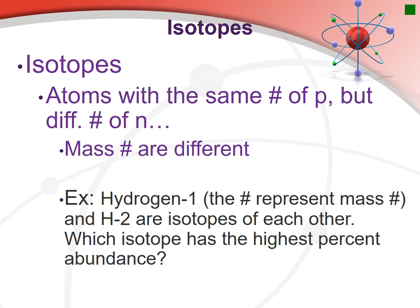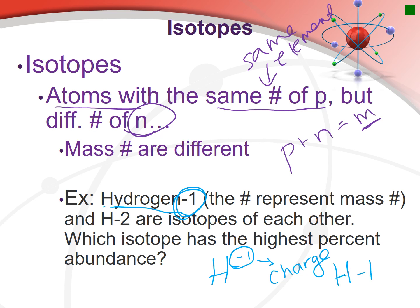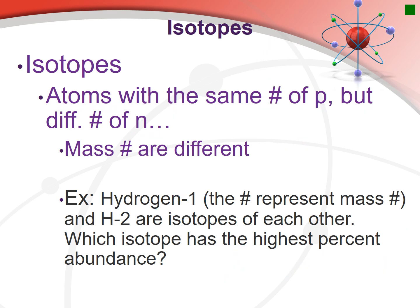The last definition you need to understand is isotopes. Isotopes are atoms with the same number of protons — meaning they are the same element — but a different number of neutrons. If they have different numbers of neutrons but the same proton count, their mass number will also be different. So isotopes of each other have different masses but are the same element. For example, hydrogen-1 and hydrogen-2 are isotopes of each other.